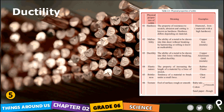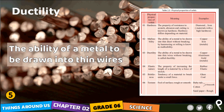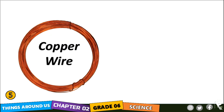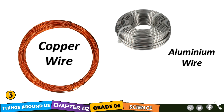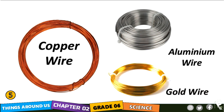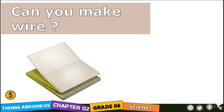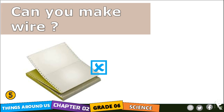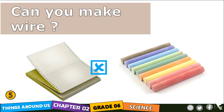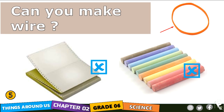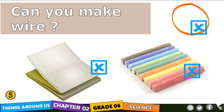Ductility is the next property. The ability of a metal to be drawn into thin wires — look at the copper wire, aluminium wire, and gold wire in front of you. These were all metals before, but they were turned into wires for different usage, so they have the ductility property. That's why we are able to make copper, aluminium, and gold into wires. Can you make wire out of paper? No. Out of chalk? No. Out of a rubber band? No.